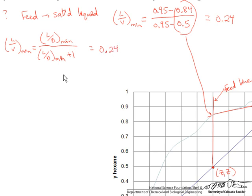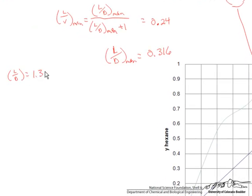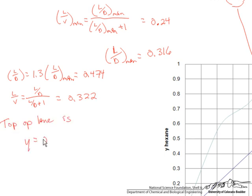Now L over V min equals L over D min over L over D min plus 1. So that equals 0.24 and L over D min equals 0.316. So our L over D min equals 0.474. And L over V equals L over D over L over D plus 1 equals 0.322. So our top operating line is Y equals 0.322X plus 0.644. This value is just the Y intercept of XD over L over D plus 1 and that equals 0.644.